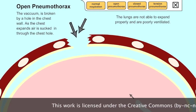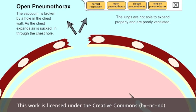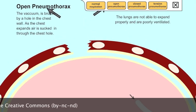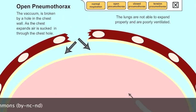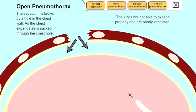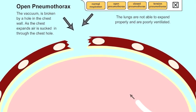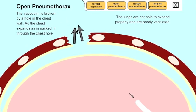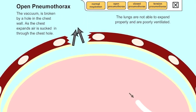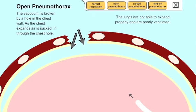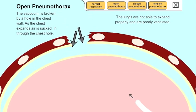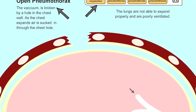Now when we have an open pneumothorax, we actually have a penetrating wound or an area where air can get from the outside into the lungs. What has occurred is that the vacuum that we rely on to allow pressure has now been essentially ruptured. It's no longer there, and as the chest expands, air is sucked in through the hole in the chest and the lungs are not able to expand properly and are very poorly ventilated.